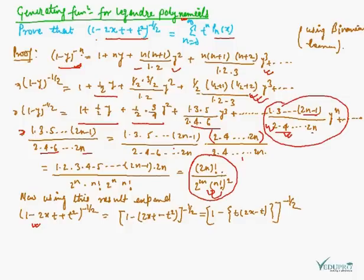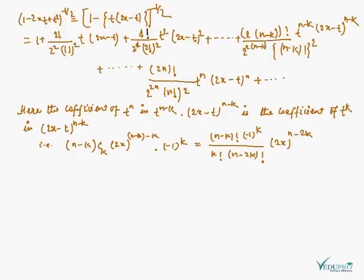The expansion of (1 minus 2xt plus t squared) to the power minus half is first written in binomial expansion form as (1 minus [t(2x minus t)]) to the power minus half. By applying the binomial expansion, we get the expansion as shown.